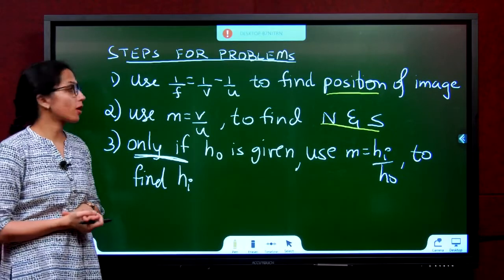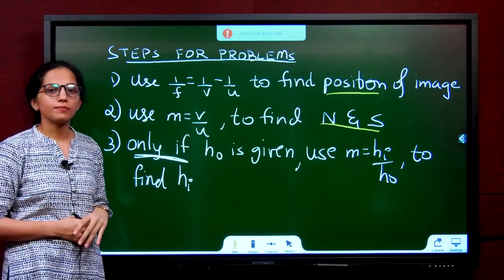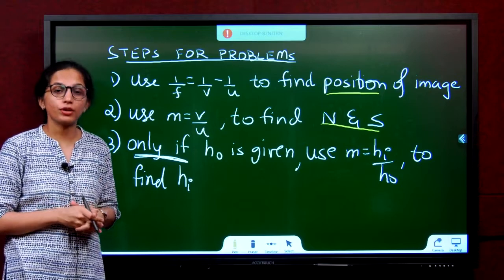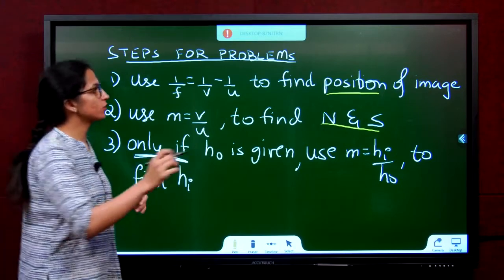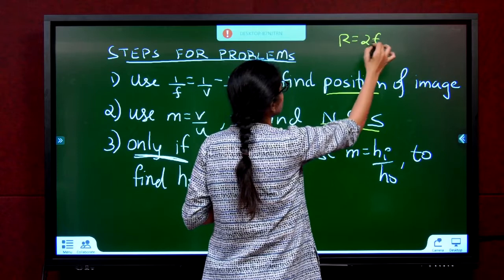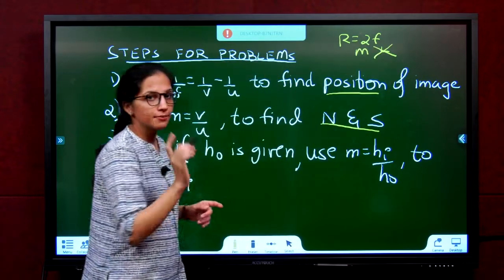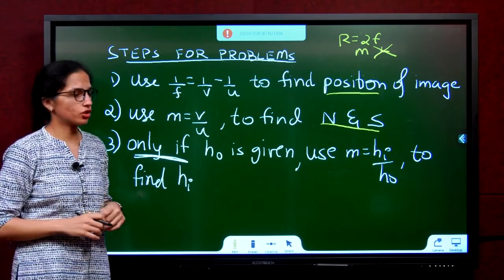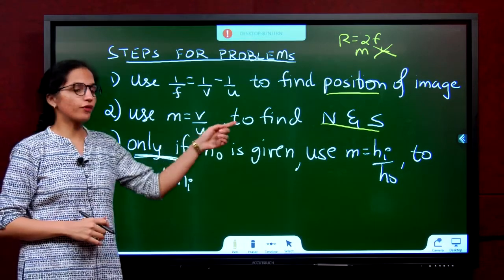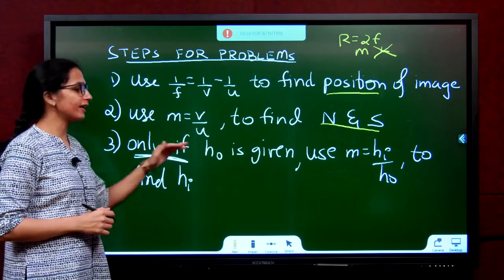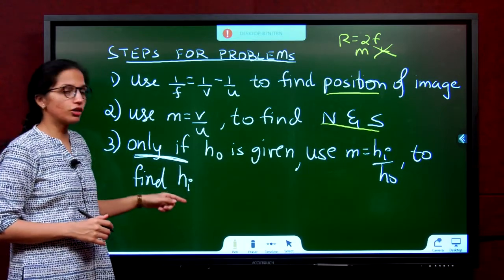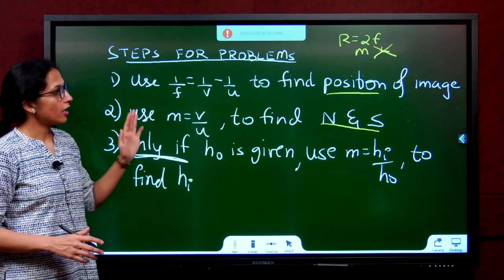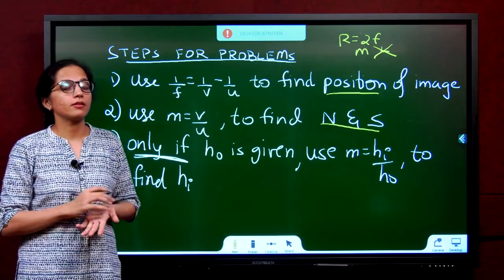We will follow these steps to solve lens problems. Step 1: use 1/F = 1/V − 1/U to find the unknown quantity. Step 2: use M = V/U to find nature and size. Step 3: only if H0 is given, use M = HI/H0 to find HI; or only if HI is given, use M = HI/H0 to find H0. Remember, R = 2F holds only for mirrors; for lenses it does not.